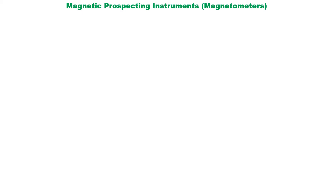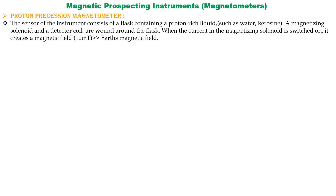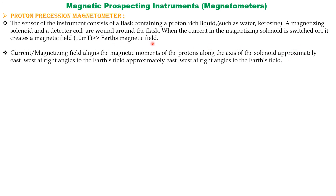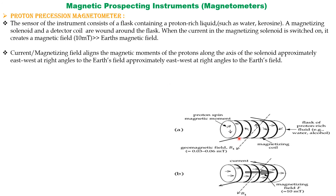The instrument used for magnetic survey is the magnetometer. The proton precession magnetometer is very popular. It contains a proton-rich liquid such as water or kerosene, a magnetizing coil, and a detector coil wound around the flask. When the magnetizing current is switched on, it creates a magnetic field much stronger than the Earth's magnetic field. The magnetic moments of the protons — which are initially randomly oriented — become aligned along the magnetizing field, at right angles to the Earth's magnetic field.